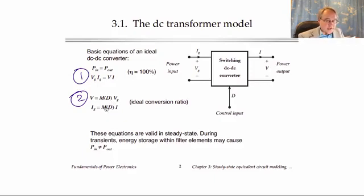Okay, there's a third equation that really comes from the first two, that if you take V from equation 2 and substitute it into equation 1, then let's do it. We get VG times IG on the left side of equation 1 is equal to V, which is M times VG,